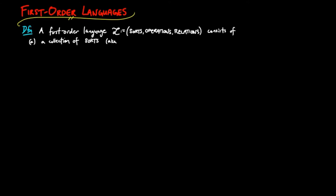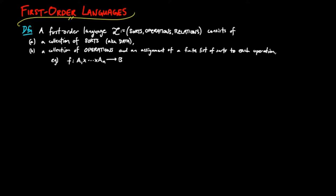consists of a collection of sorts, a collection of operations, with an assignment of a finite list of sorts to each operation. For example, we write F from the product A1 to AN to B, when the operation F is assigned the list A1 to AN,